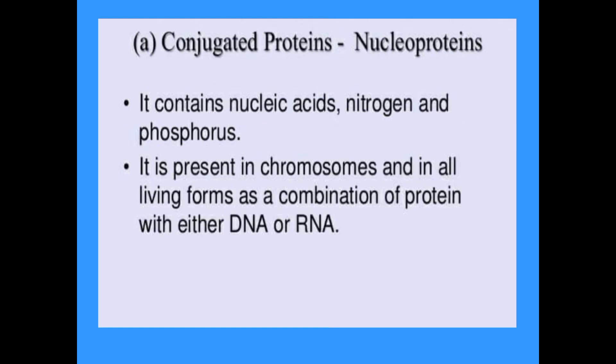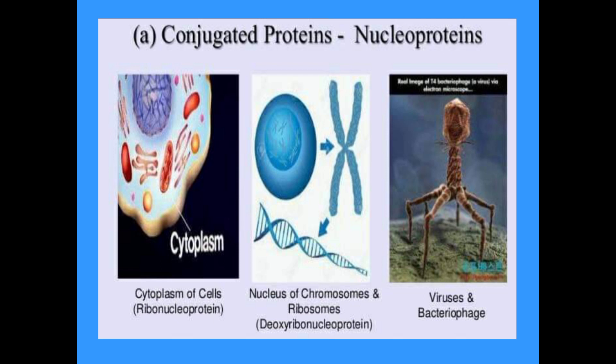Conjugated proteins include nucleoproteins, which contain nucleic acids, nitrogen, and phosphorus. They are present in chromosomes and all living forms, as a combination of protein with either DNA or RNA. DNA is a double-stranded molecule and RNA is a single-stranded molecule. Examples include ribonucleoproteins in the cytoplasm and ribosomes, and deoxyribonucleoproteins in chromosomes. Viruses and bacteriophages also contain nucleoproteins.